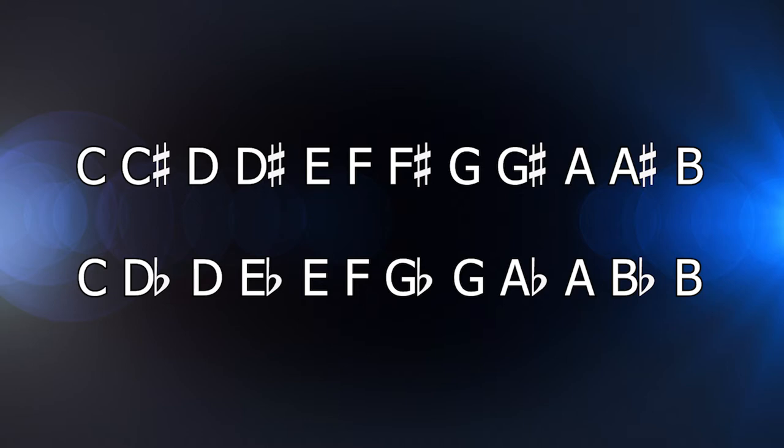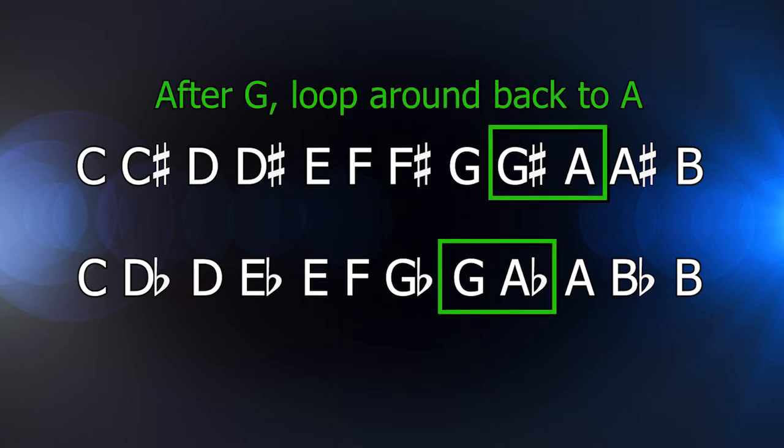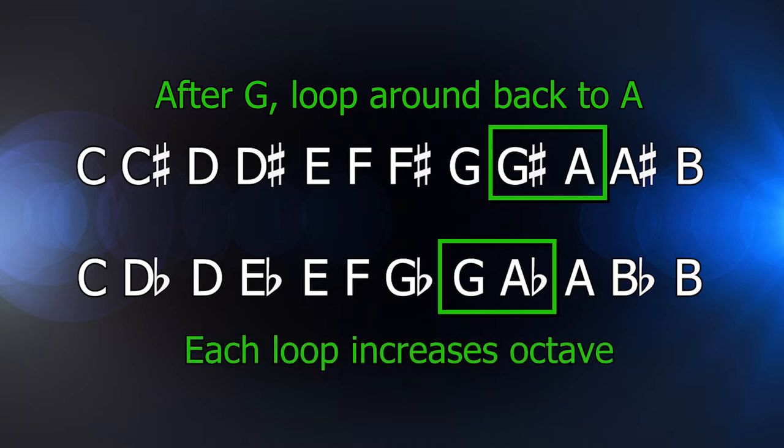One thing you should notice is that when we reach G, we loop around back to A. This pattern continues as we go up the notes. However, each time we loop around, we've reached a higher octave. As previously mentioned, the higher the octave, the higher the pitch. But the letters in each octave is the same.